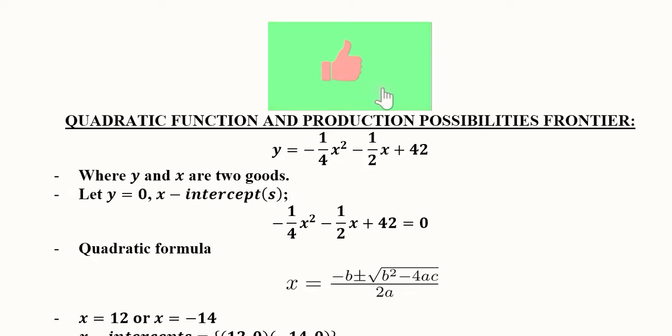So if we consider that we have a quadratic function showing the relationship between two goods, that is good x and good y, and this is the quadratic equation: y = -1/4 x² - 1/2 x + 42.